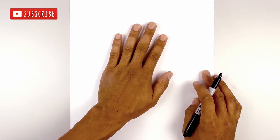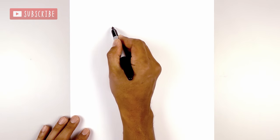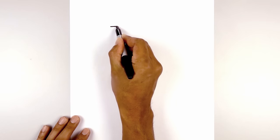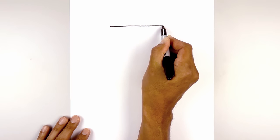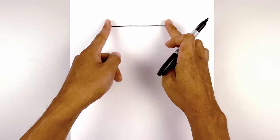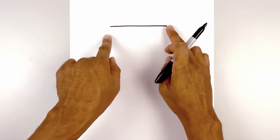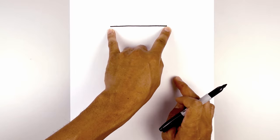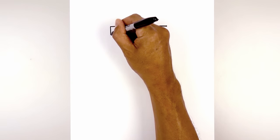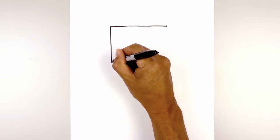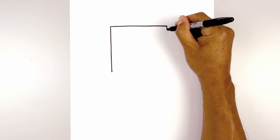We're going to get started by drawing a large square in the center of our page for the head. Start along the top and draw a straight line from left to right. Now we're going to go to the sides and draw two straight lines coming down. I want to make sure that these lines are the same length that we have on top. Let's start on the left side and come straight down. Now go to the right and do the same thing.